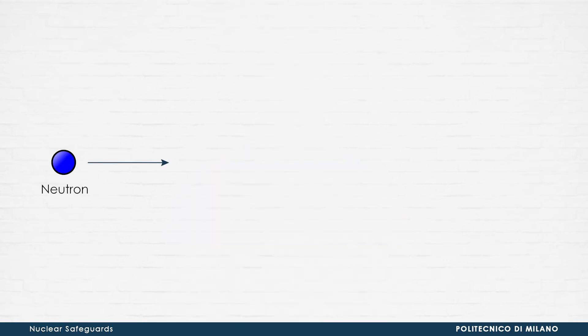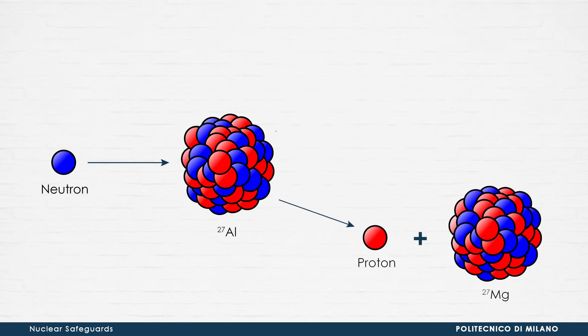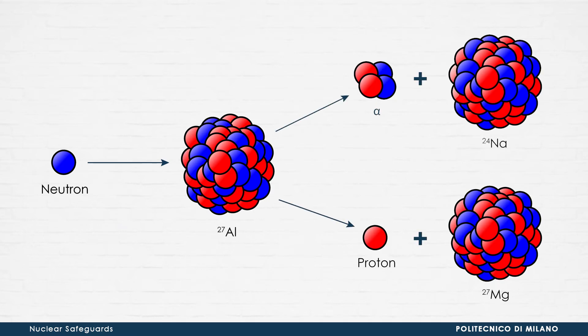It is important to point out that, in general, several products can be generated by the same projectile target pair. For example, the collision of a neutron with the nucleus of aluminum-27 can lead to the production of a proton or an alpha particle. Each of these reaction channels has its own probability of occurrence, according to the general laws of quantum mechanics.